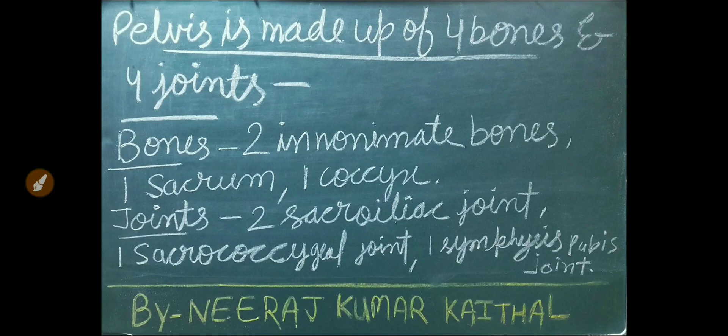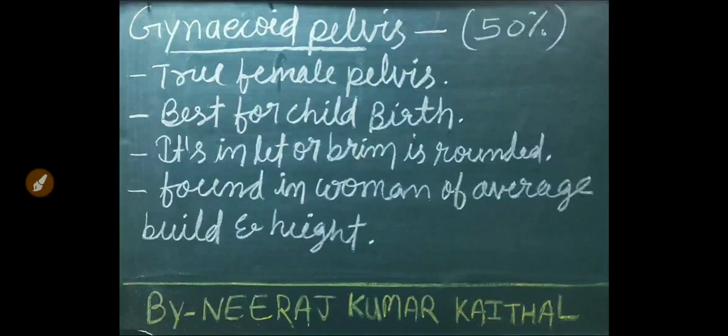The pelvis is made up of four bones and four joints. The bones are two innominate bones, one sacrum, and one coccyx. The joints are two sacroiliac joints, one sacrococcygeal joint, and one symphysis pubis joint.